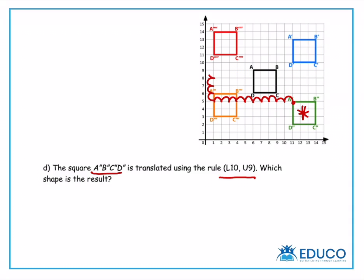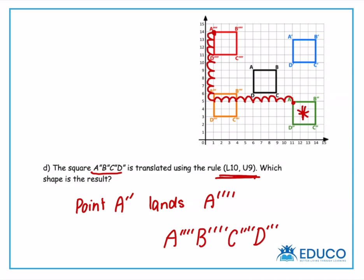1, 2, 3, 4, 5, 6, 7, 8, 9. So we can see that point A double prime lands on A 4 prime. So we know that our resultant shape after following this rule of left 10 up 9 would be our red box or A, B, C, D all to the fourth prime. And that is our last question all done.